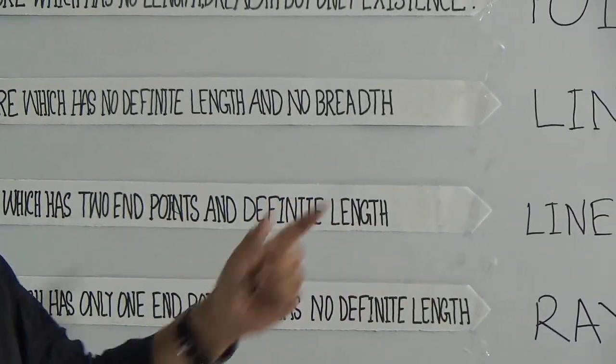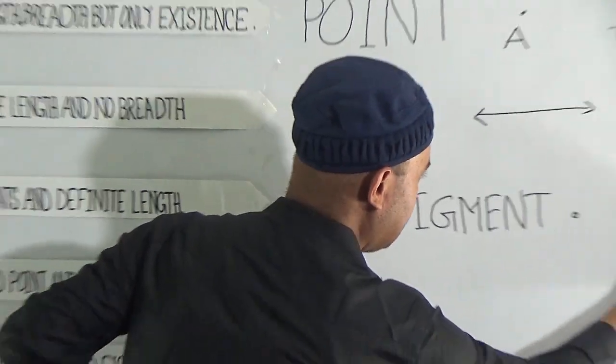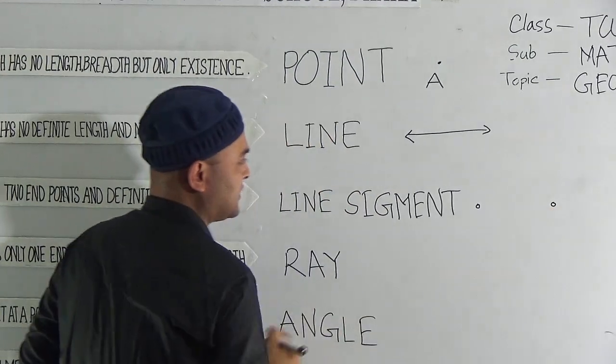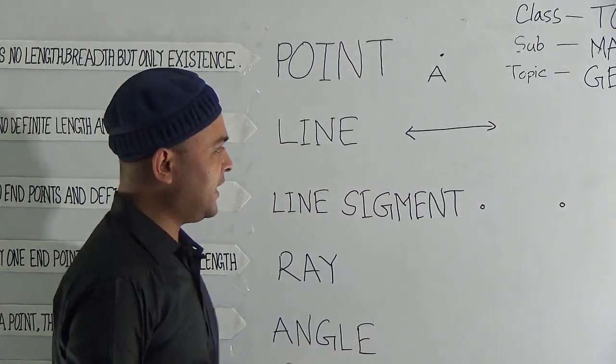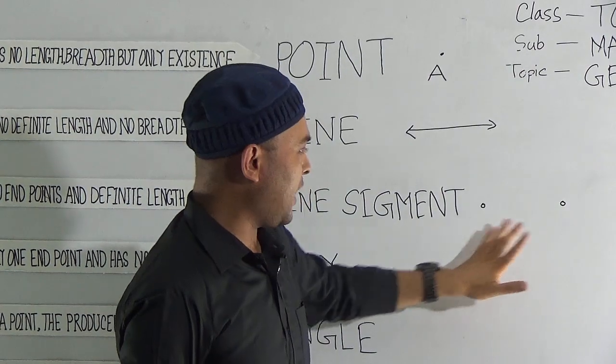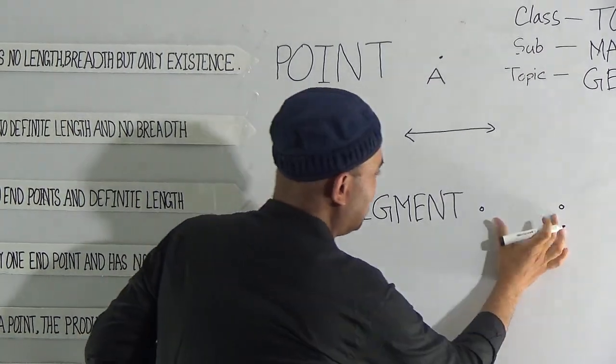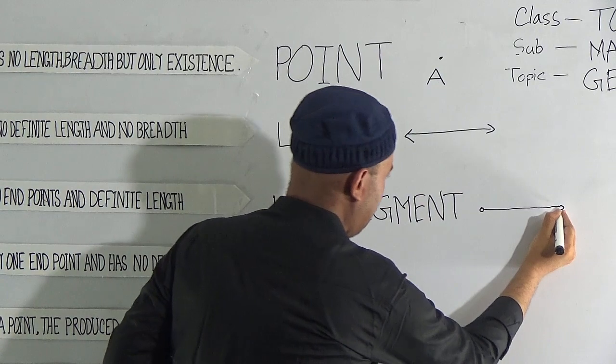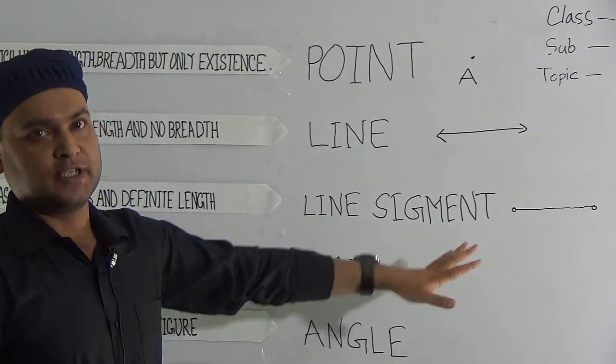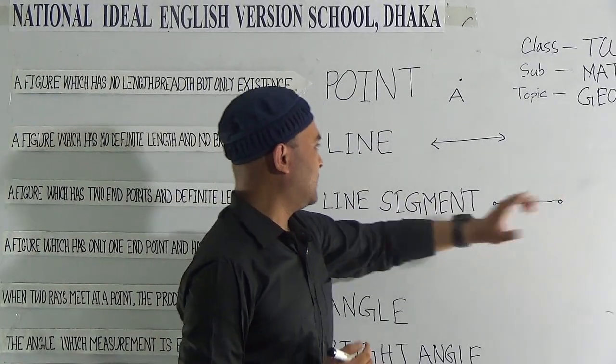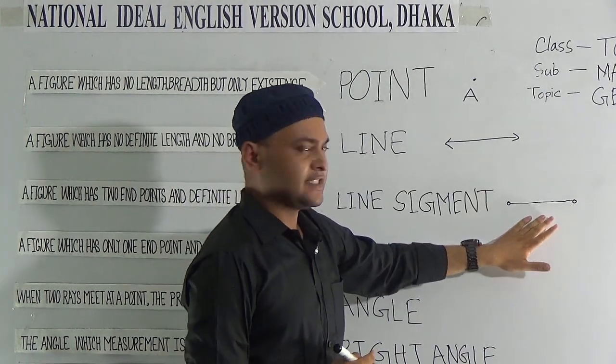Line segment is a figure which has two end points and definite length. Two end points means this and this. If we consider this is the beginning and this is the ending, two end points and definite length is called a line segment.